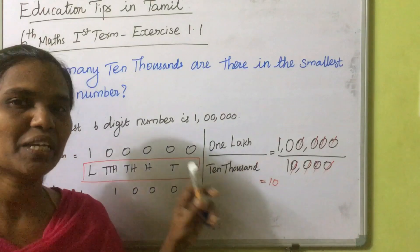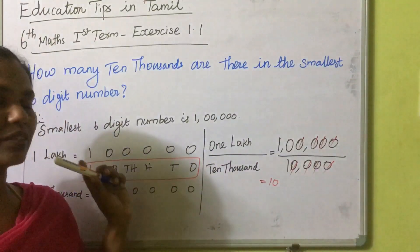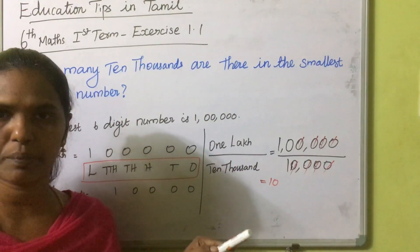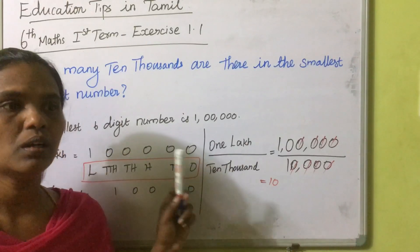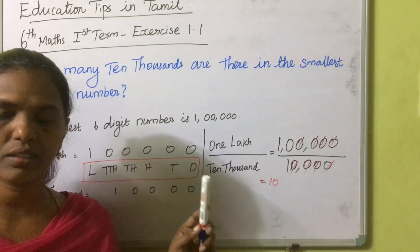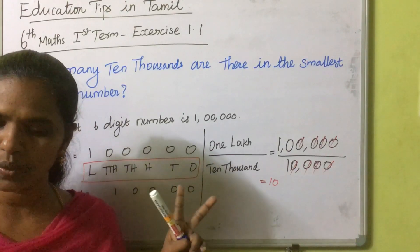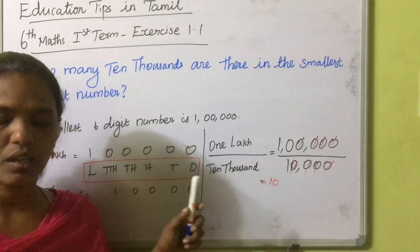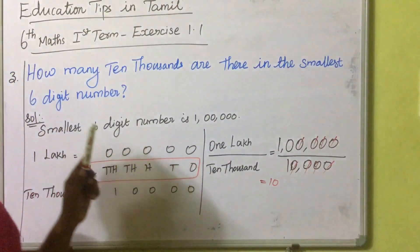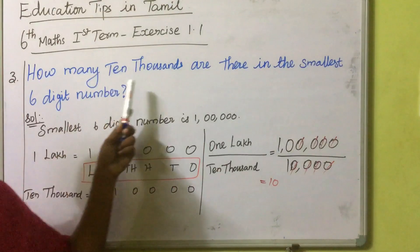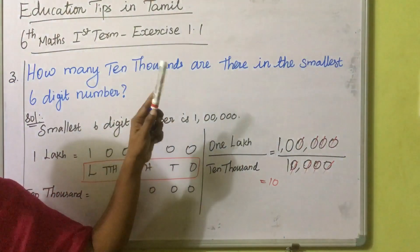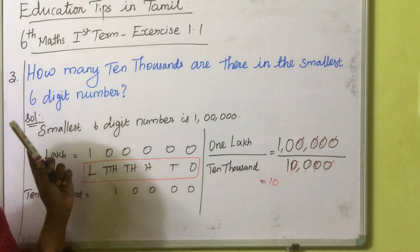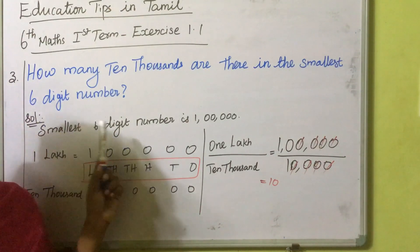Hello students, we are continuing this — it's Math, First Term, Section 1.1. We already saw the first two fill-in-the-blank answers. Now the third one: how many ten-thousands are there in the smallest six-digit number?